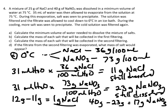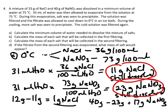Part D says: if the filtrate from the second filtering was evaporated — the liquid that comes through the funnel — what mass of salt would appear? Looking at our results, at 0 degrees Celsius there's 11 grams of table salt still dissolved in that water and 23 grams of sodium nitrate still dissolved. If you evaporate the water, you'd get 11 grams of NaCl and 23 grams of NaNO3, for a total of 34 grams of salt collected.